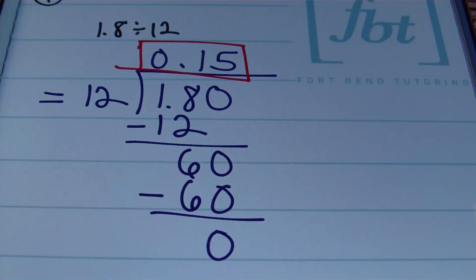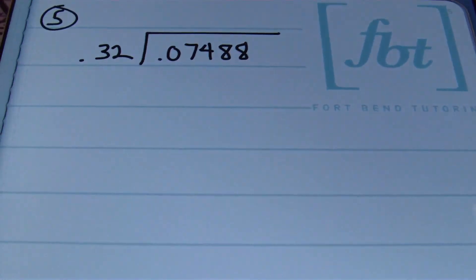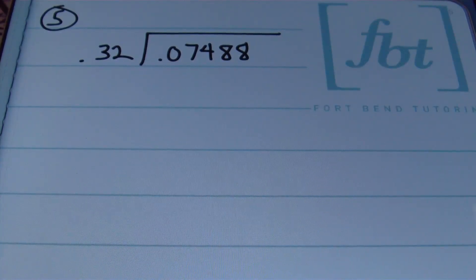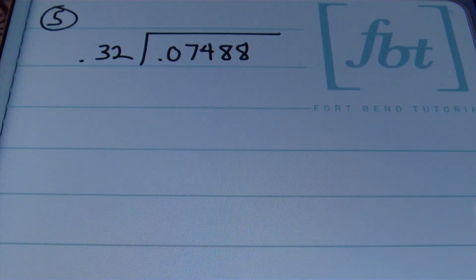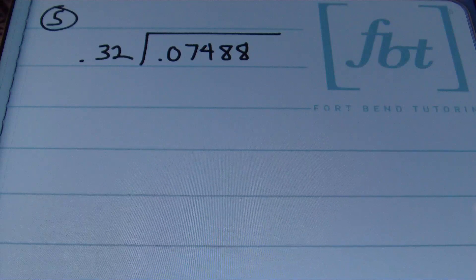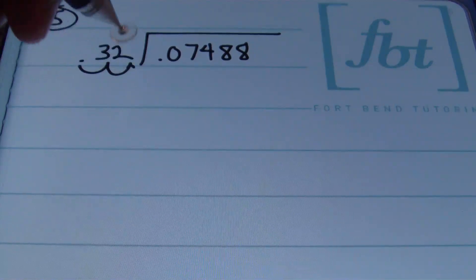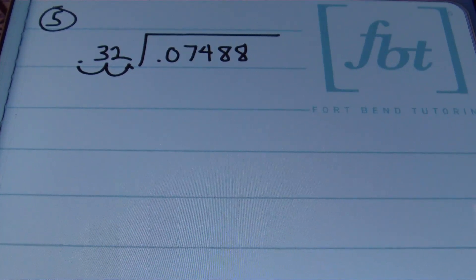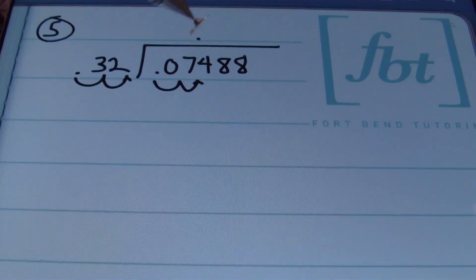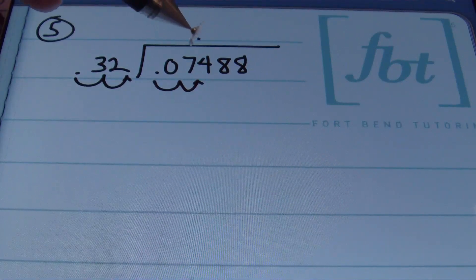In problem number five, we have 0.32 as a divisor and the dividend is 0.07488. First, make the divisor a whole number by moving the decimal two places to the right. Since we moved two places right in the divisor, we also move two places right in the dividend, then bring the decimal straight up — it lands between the 7 and the 4. Now we check how many times 32 goes into 7: that's zero times, so we move to 74.